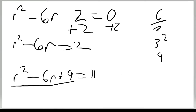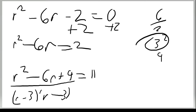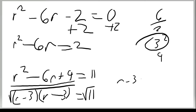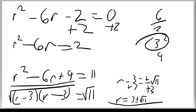We can factor the left side: what plus what and what times what gives us (r minus 3)(r minus 3) equals 11. Taking the square roots of both sides, we get r minus 3 equals plus or minus the square root of 11. Adding 3 to both sides gives our final answer: r equals 3 plus or minus the square root of 11.